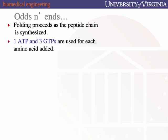If you do the energetic inventory of one cycle of translation, it takes four NTPs: one ATP to make the ester bond at the acceptor stem to charge up the tRNA, and three GTP hydrolysis events — two for EFTU and one for EFG.